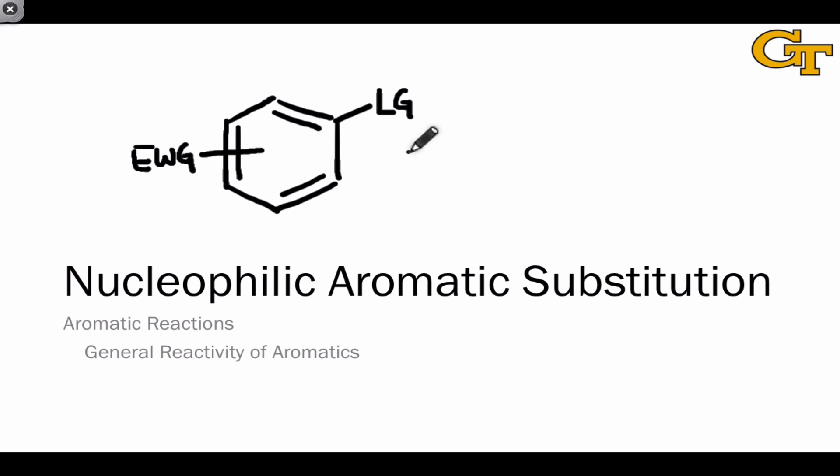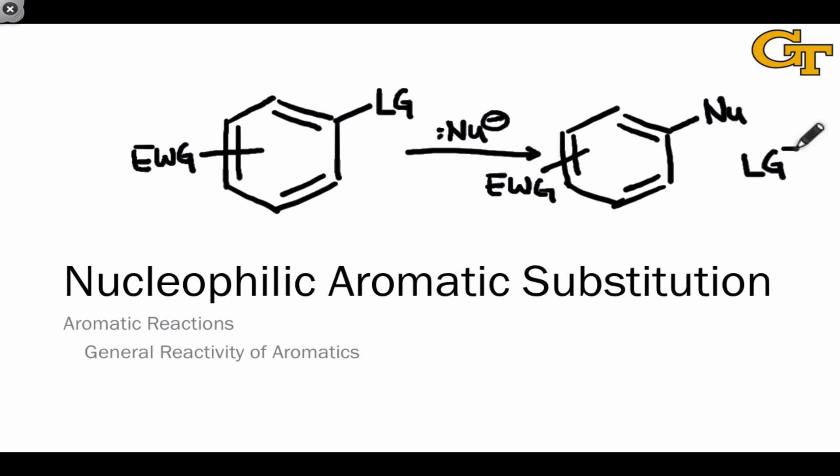Typically these substrates contain a leaving group or nucleophage connected to the aromatic ring in addition to the electron-withdrawing groups. In a nucleophilic aromatic substitution reaction, a nucleophile substitutes for a leaving group. In that sense, this reaction is analogous to nucleophilic substitutions at tetrahedral carbon that we've seen previously. A new bond is formed between the nucleophile and one of the carbons of the aromatic ring, and the leaving group departs as its conjugate base, forming LG-.